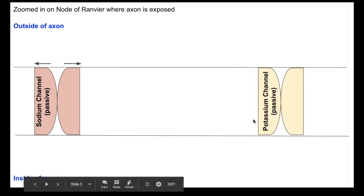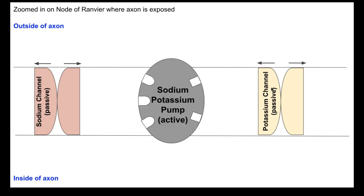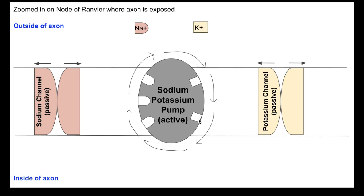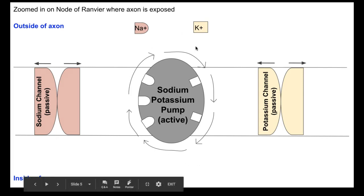We also have a potassium channel — again uses passive transport — allowing potassium out of the axon by opening and closing. And we also have a sodium-potassium pump that uses active transport, requiring ATP to go against the concentration gradient. This pump spins, and every time it spins, three sodium can leave the axon and two potassium can attach and go into the axon. So it's rotating constantly: three sodium leaving, two potassium coming in, three sodium leaving, two potassium coming in.